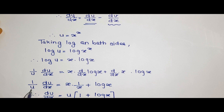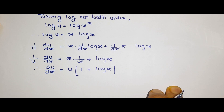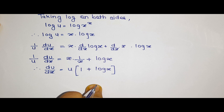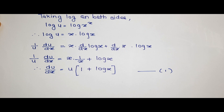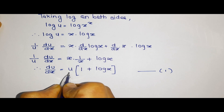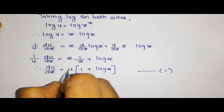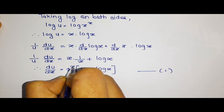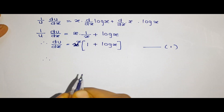We multiply u back to the right hand side. The x terms cancel, leaving us with du by dx is equal to u into 1 plus log x. Resubstituting the value of u, which is x raised to x, we get du by dx is equal to x raised to x into 1 plus log x.